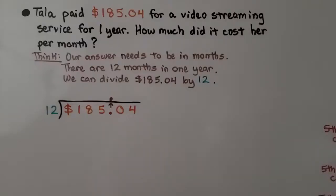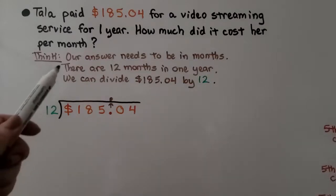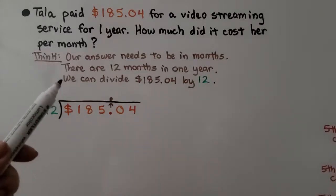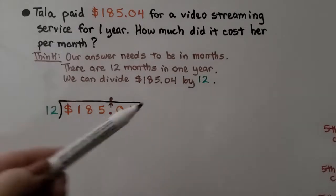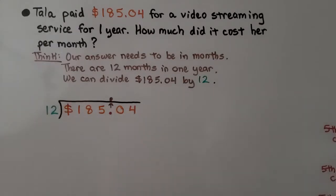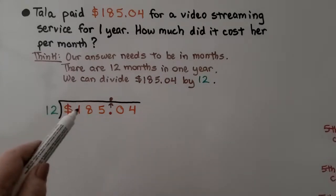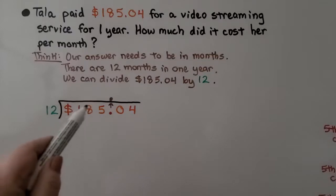This problem says, Tala paid $185.04 for a video streaming service for one year. How much did it cost her per month? We think our answer needs to be in months. We need to find per month. There's 12 months in one year, so we can divide $185.04 by 12. That'll tell us the cost of one month. Can 12 fit into 1? Nope. Can 12 fit into 18? Yes. How many times? One time.